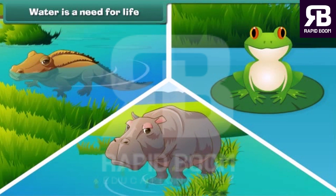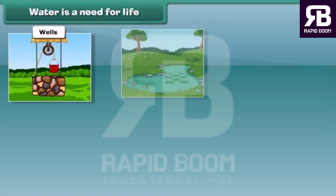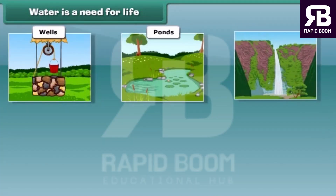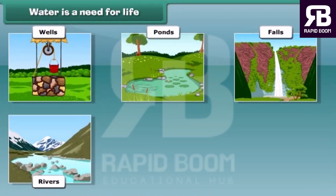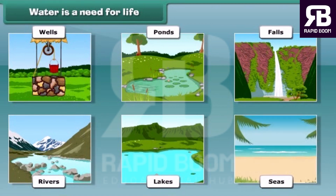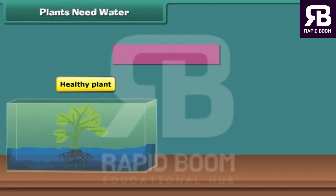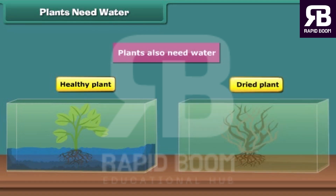Water is essential for the existence of living beings. We find water in wells, ponds, falls, rivers, lakes and seas. Not only animals, but plants also need water for survival. Otherwise, they will dry up.